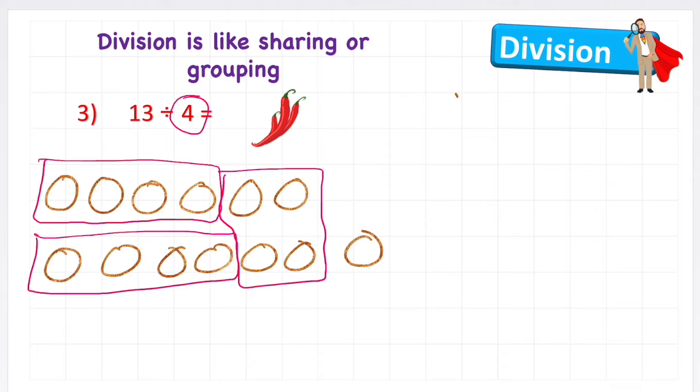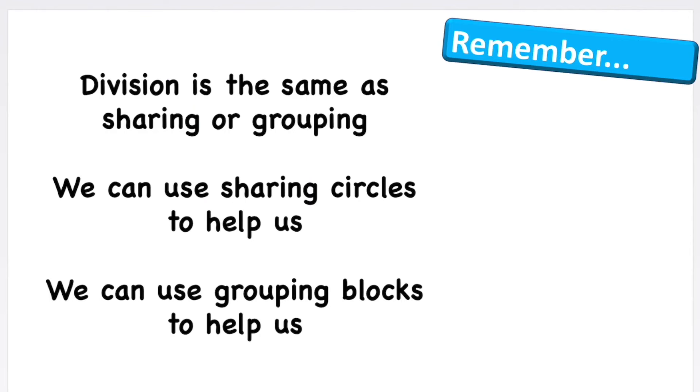So how many groups do I have? I have one, two, three, but with one remaining. So my answer, again, is three, remainder, one. Okay, hopefully you understood that. That was a really tricky little skill for division. So if you did, super job.